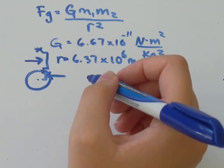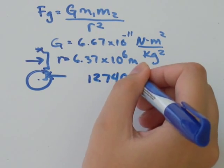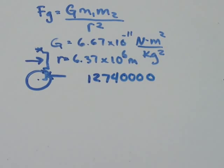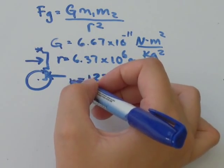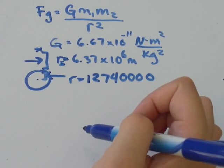So when we add those together, I get r equals 12,740,000. And that's going to be equal to r in this question. That r was the radius of the Earth.